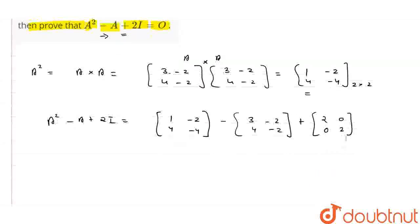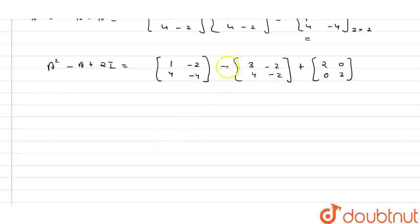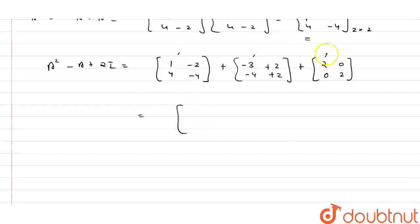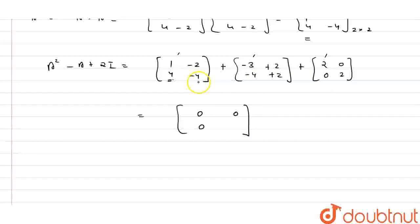Now adding all three matrices — taking the minus sign inside for A — the first element of the first row is 1 - 3 + 2 = 0. The second element of the first row is -2 + 2 + 0 = 0. The first element of the second row is 4 - 4 + 0 = 0, and the second element of the second row is -4 + 2 + 2 = 0. This equals the O matrix — the 2×2 null matrix — hence proved.